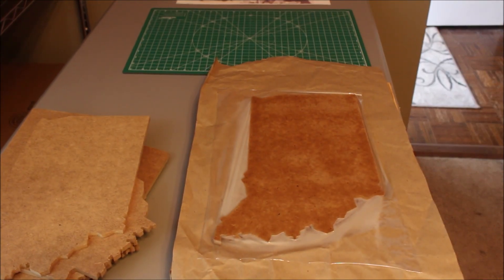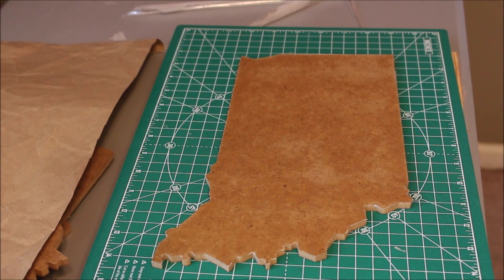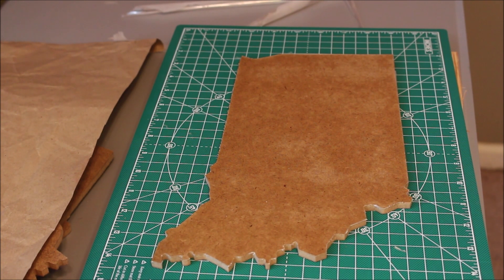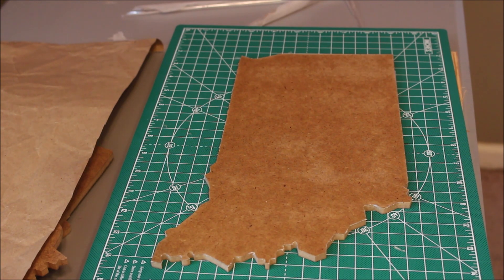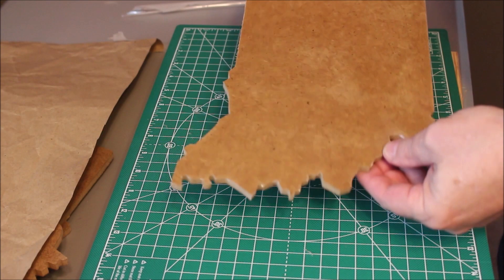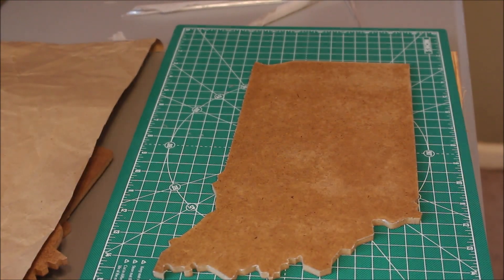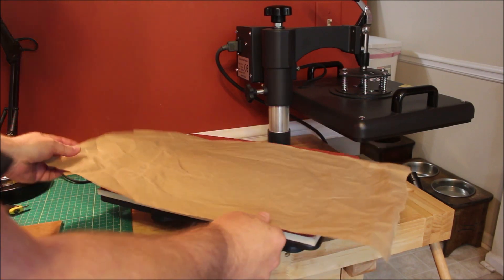Here you can see how the laminate just bonds to the MDF and you have a really smooth, shiny surface. Off camera, I took my X-Acto knife and trimmed all the laminate around the edges. It would have been a lot easier if I was doing a state like Colorado or something like that. But Indiana is a little tough with that southern portion there, but I got it done.